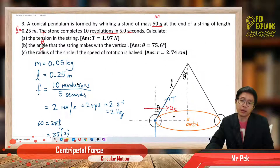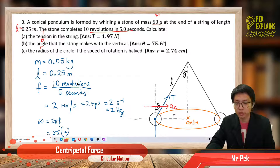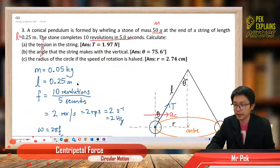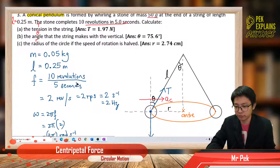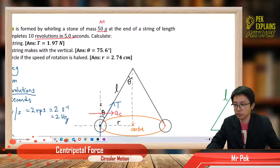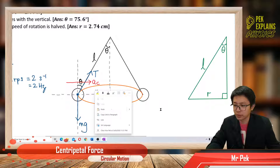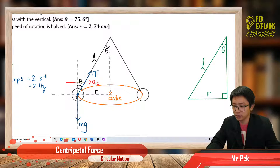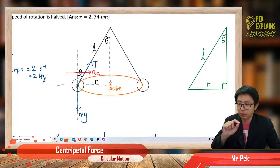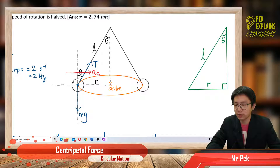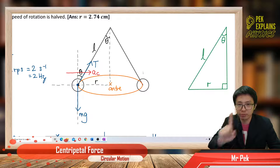Find the tension. Whenever you want to try a circular motion question, you must begin with drawing a free body diagram. It is a conical pendulum — it looks like a cone. So when you whirl the stone in a cone shape, you draw the free body diagram showing all the forces. You must draw a point mass at the center, and all the forces coming out from that one point.